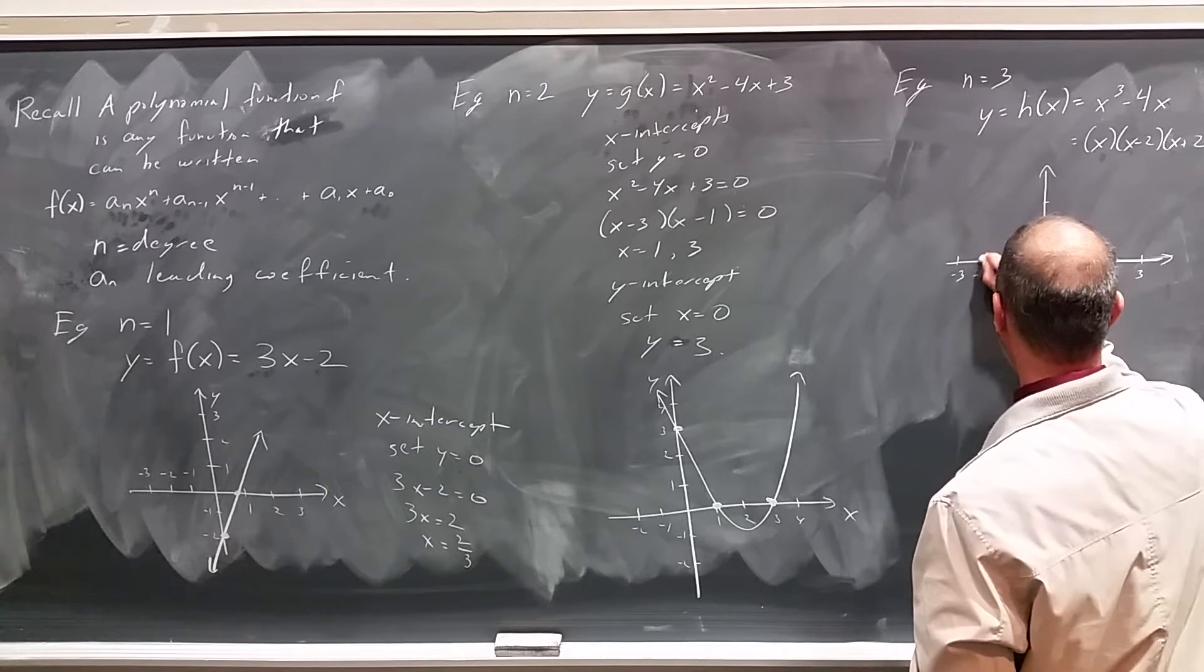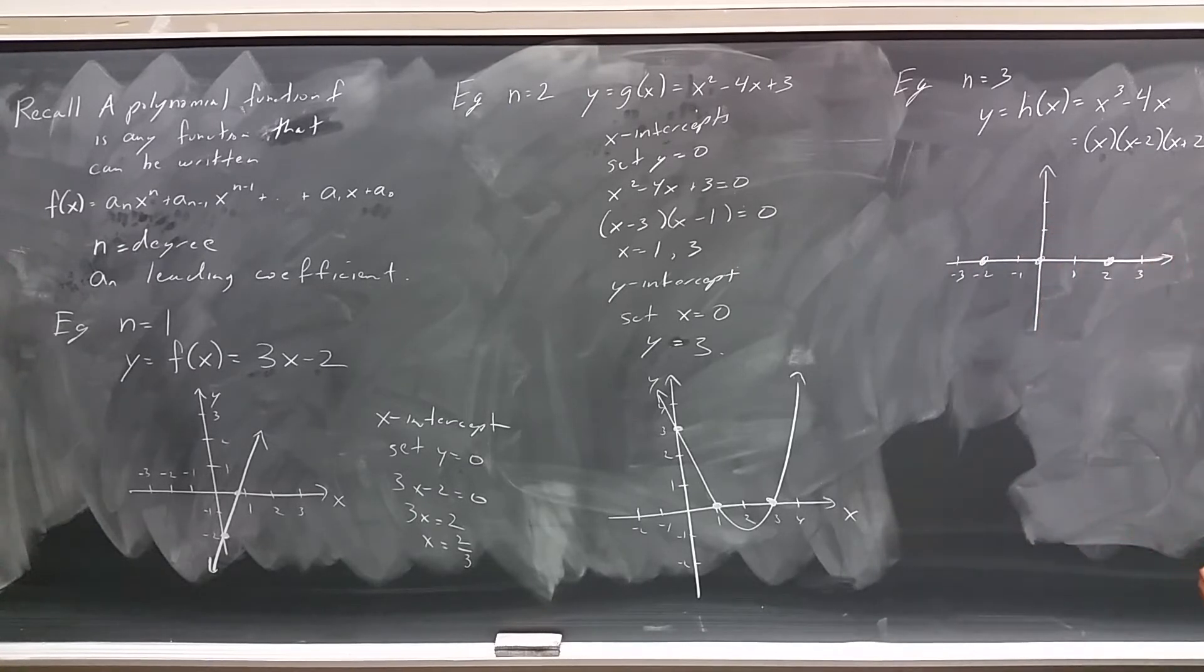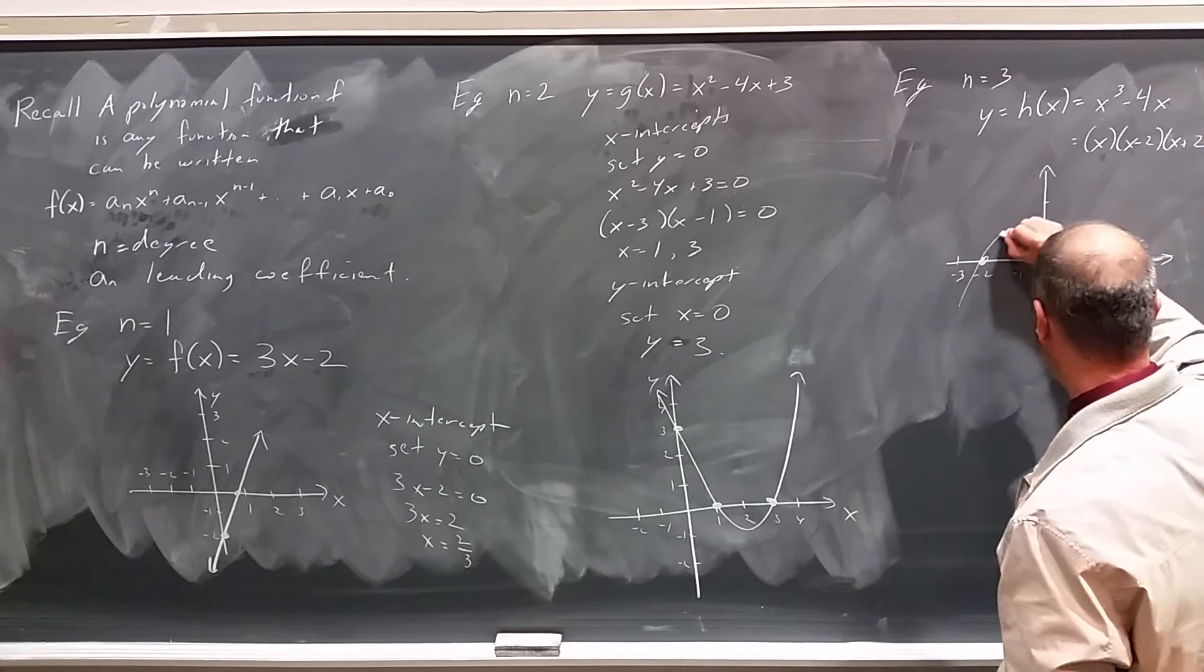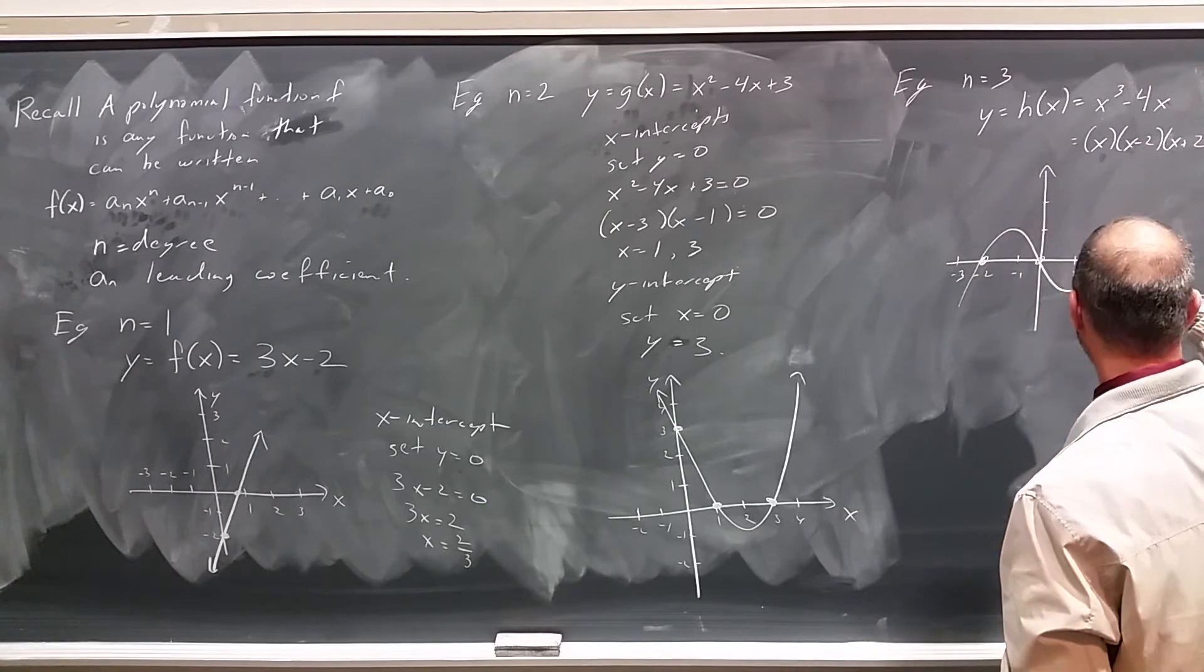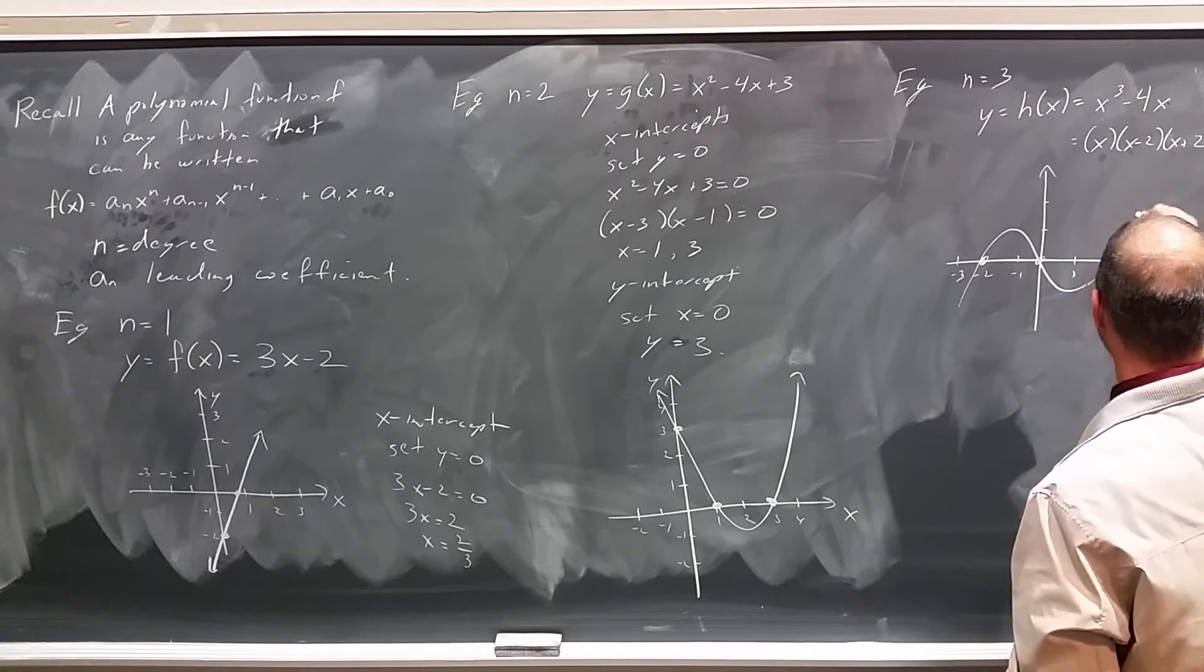So it crosses the x-axis here, here, and here. I'm not going to go through the details of how we'll graph this. We will study that later in the course. But this graph looks very much like that.